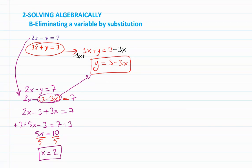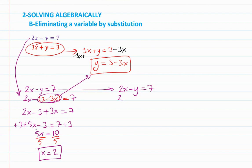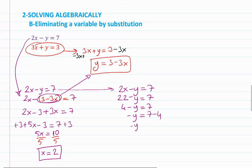So we found x equals 2. Substituting into the purple equation 2x minus y equals 7: 2 times 2 minus y equals 7 gives 4 minus y equals 7, so negative y equals 3, giving y equals negative 3.